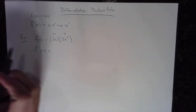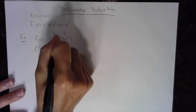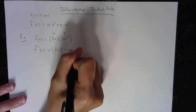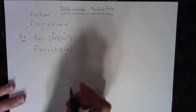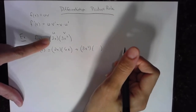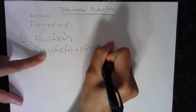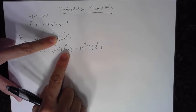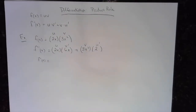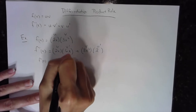So u is my first expression (2x) and v is my second expression (3x squared). To find f prime of x: we take the first — 2x, copy it down — times the derivative of the second. The derivative of 3x squared is 6x. Then plus the second (3x squared, copy it down) times the derivative of the first — the derivative of 2x is just 2. So we have u·v′ + v·u′.